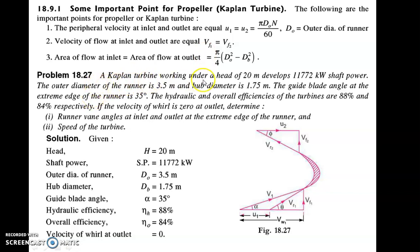Let us see a numerical: a Kaplan turbine working under a head of 20 meters develops 11,772 kilowatt of shaft power. The outer diameter of the runner is 3.5 meters and the hub diameter is 1.75 meters. The guide blade angle at the extreme edge of the runner is 35 degrees, that is alpha equals 35 degrees. The hydraulic and overall efficiencies are 88 percent and 84 percent respectively.